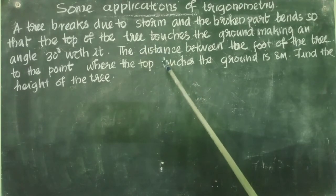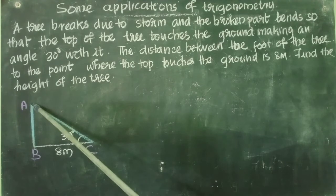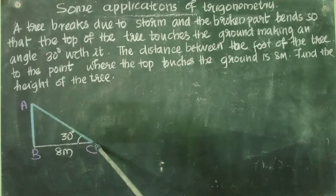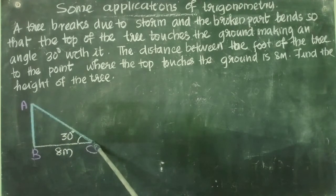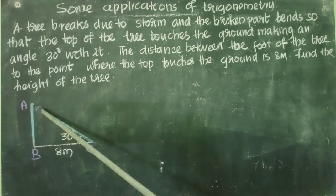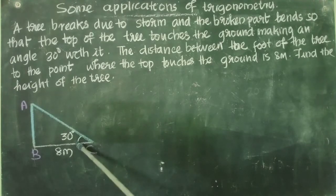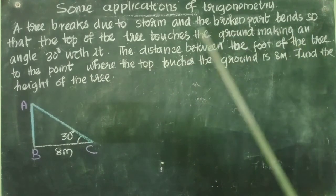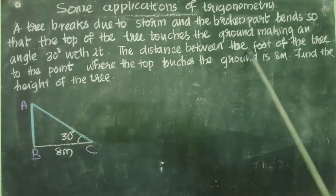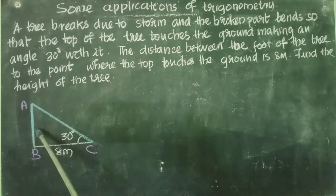First, let us draw a figure based on this information. There is a tree. It breaks due to storm and the top of the tree touches the ground, making an angle of 30 degrees with the ground. So AB and AC together form the tree. From this point it has broken and the broken part bends, with the top touching the ground. The distance BC is 8 meters. We need to find out the height of the tree.